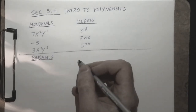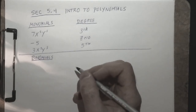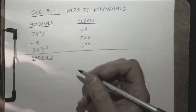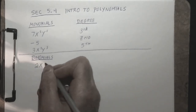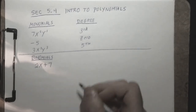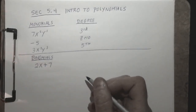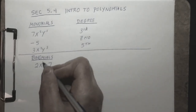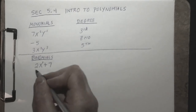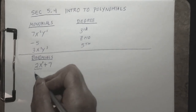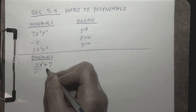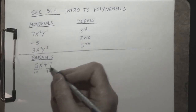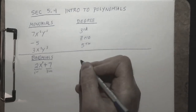Binomials are two-term variable or algebraic expressions, and terms are separated by addition or subtraction. An example binomial would be 2x + 7. The degree of a binomial is equal to the highest degree term. This first term is of the first degree; the second term is of the zero degree since it's a constant, so the degree of this entire binomial would be 1st degree.